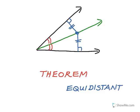If I pick a different point on the angle bisector, it doesn't matter — hitting each side at a perpendicular, those distances are still equal. The point is that every point on any angle bisector is always equidistant from the sides of the angle.